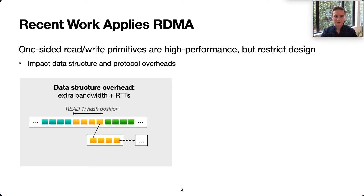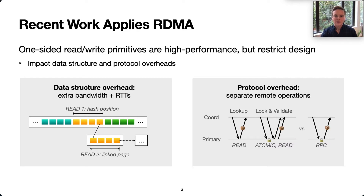FARM, for instance, reads eight objects at a time, so each remote lookup consumes network bandwidth of at least eight objects instead of just one. And some objects also require a second network round trip. One-sided RDMA adds overhead to the protocol design as well. OCC often requires looking up an object, acquiring a lock, and validating the version number. This can be done easily with a single software RPC, but one-sided RDMA requires multiple network operations for the same logic.